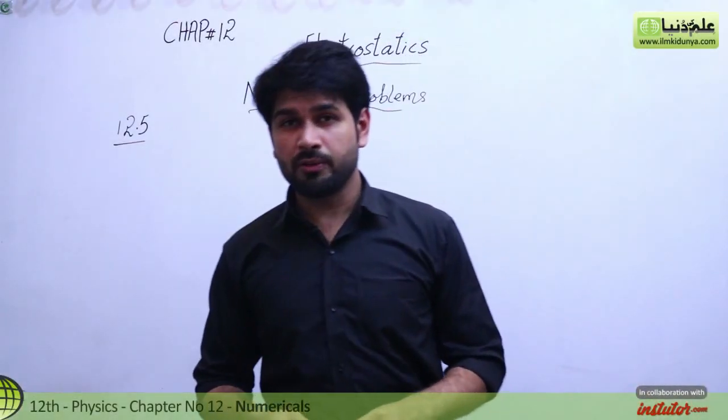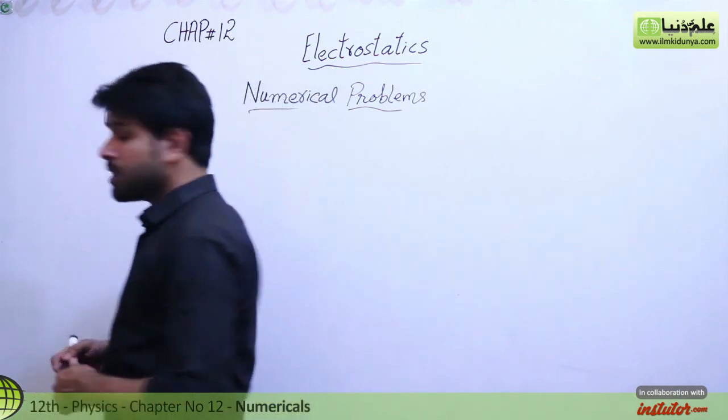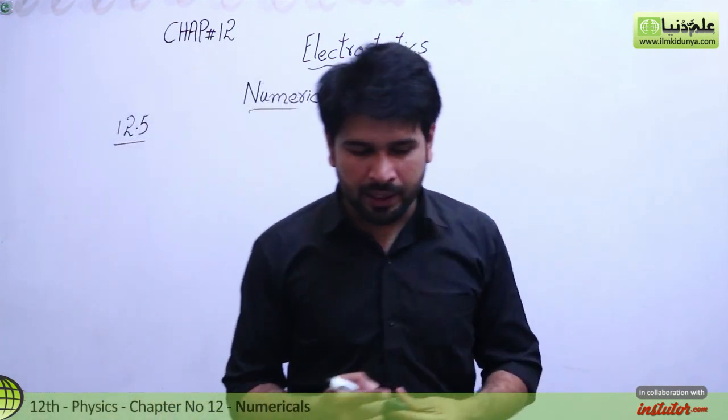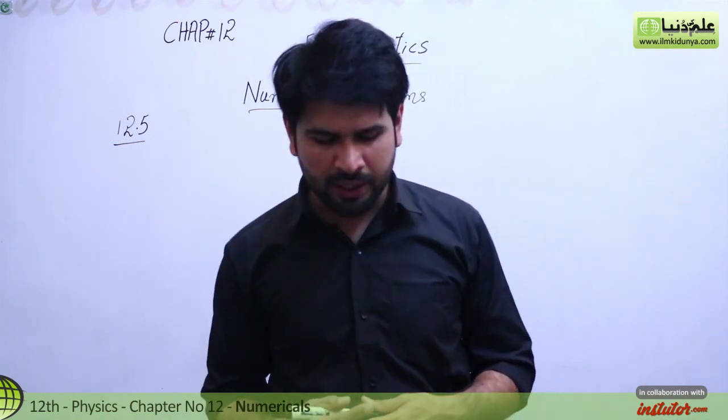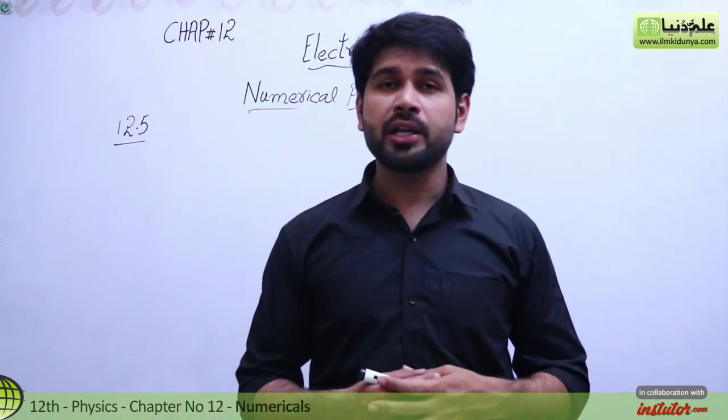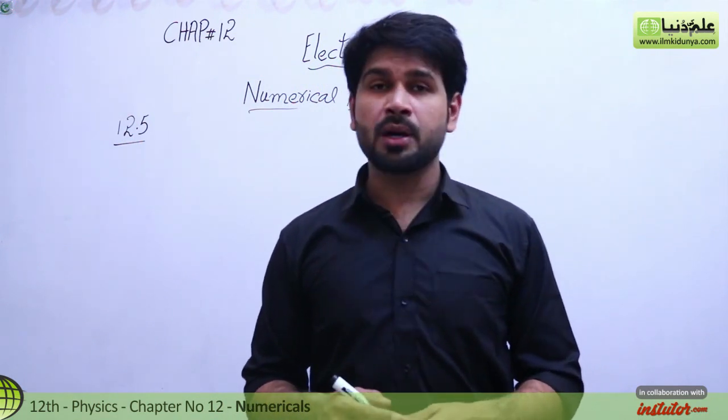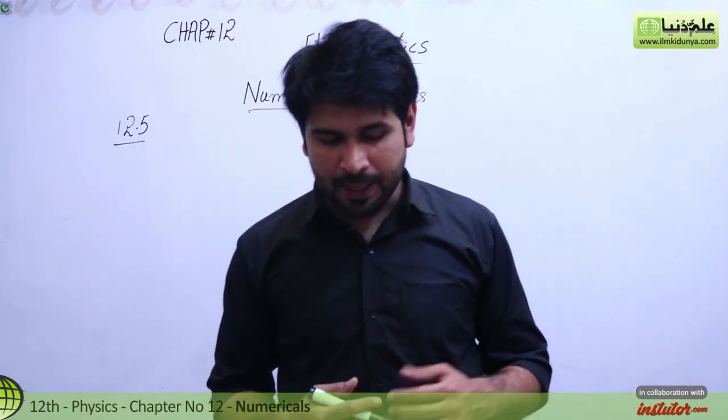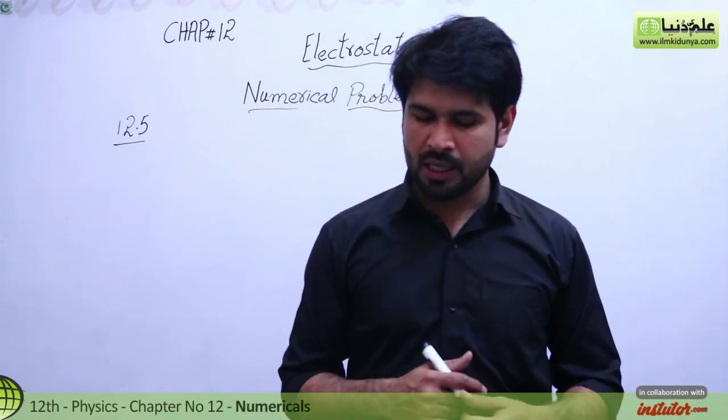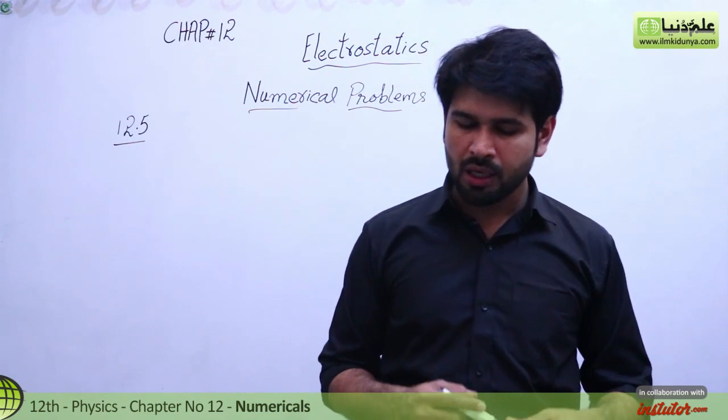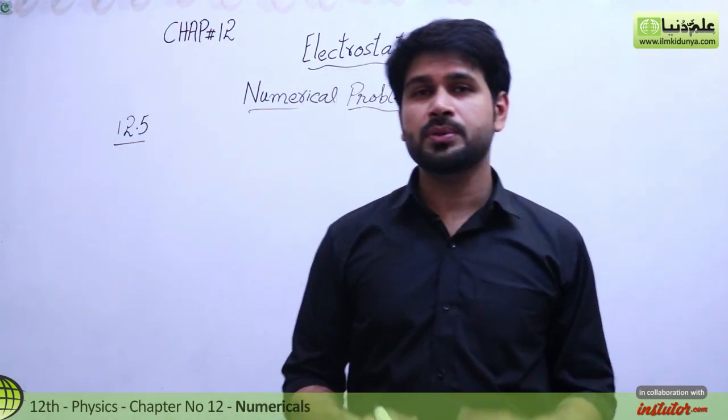Okay students, now we are going to solve the next numerical problem, which is 12.5. We have two point charges: q1 is given as minus 1.0 times 10 to the power minus 6 coulombs, and q2 is given as plus 4.0 times 10 to the power minus 6 coulombs, separated by a distance of 3.0 meters. We need to find and justify the zero field location.